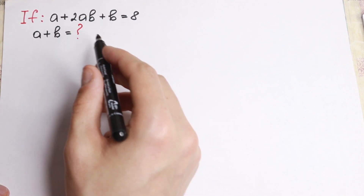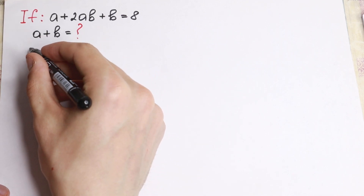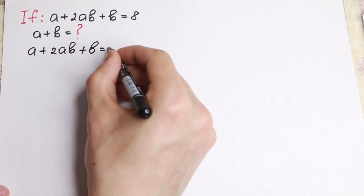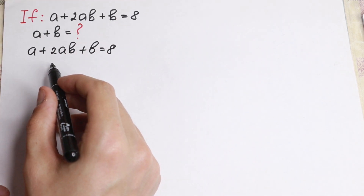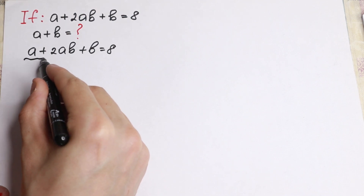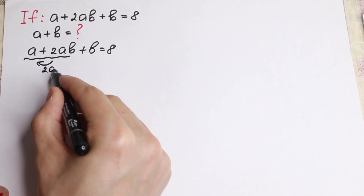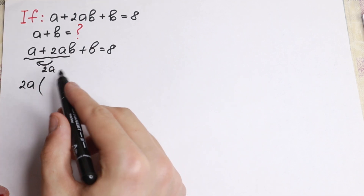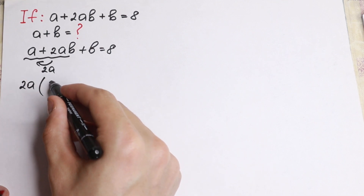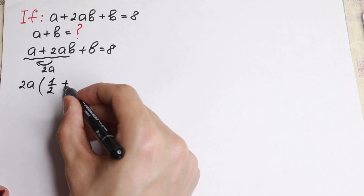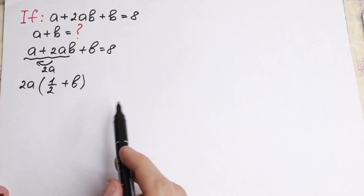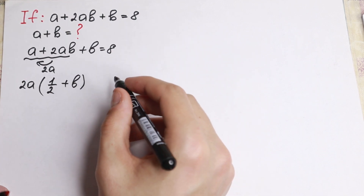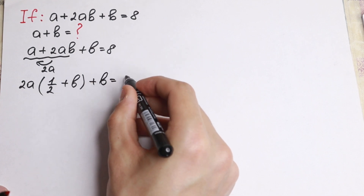First of all, take a look — let's factor out from this expression. We have a plus 2ab plus b equal to 8. Let's factor out 2a from these two elements. If we factor 2a, in the parenthesis we will have not a but only one half, and of course plus b, because from here we factor out 2a. I hope you understand this step.